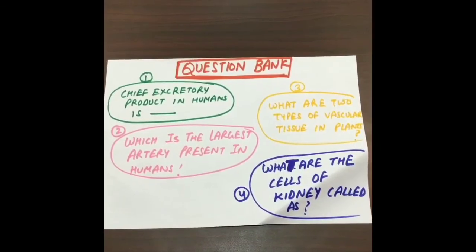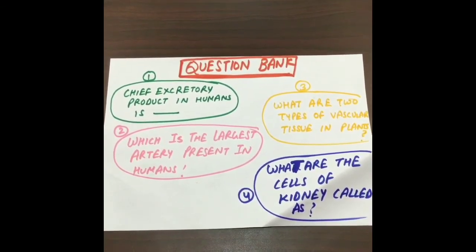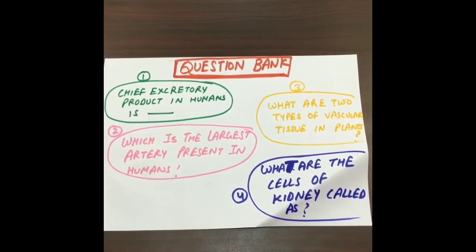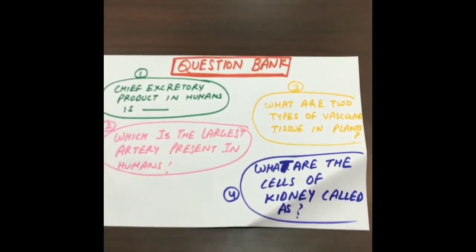Now let us check how much you have learnt with a small test. Your first question is: what is the chief excretory product in humans? Your second question is: which is the largest artery? Your third question is: what are the two types of vascular tissue in plants? Your last question is: what are the cells of kidneys called? If you cannot get the answers, do not panic — see the video again and you will get it. If you still have a doubt, feel free to ask. Subscribe to my channel for more videos. See you in my next video. Bye!